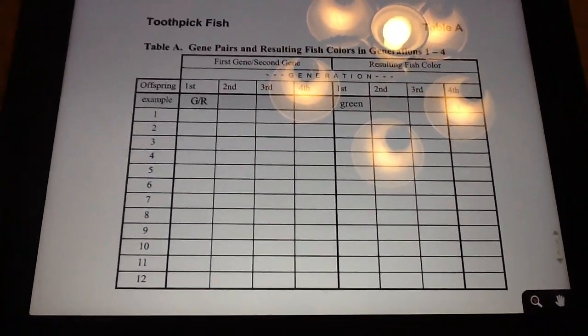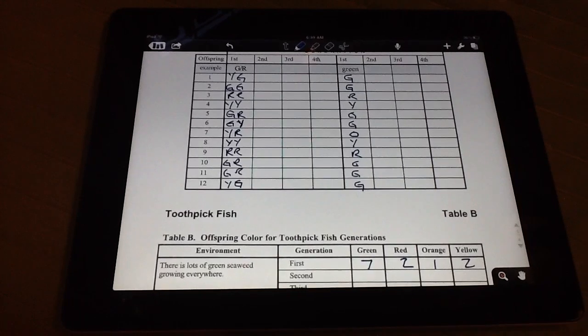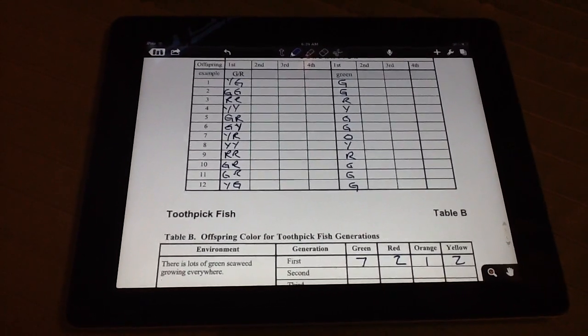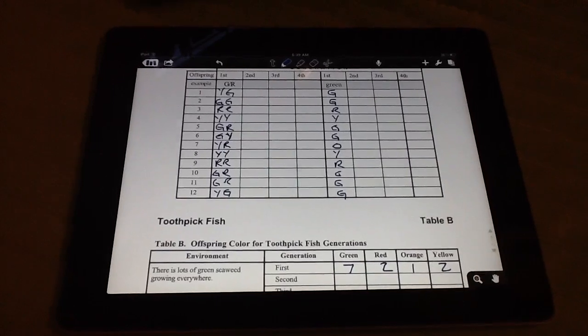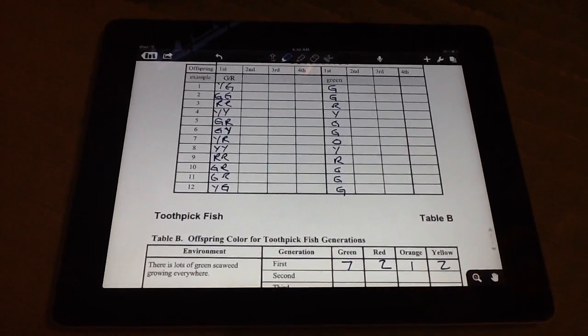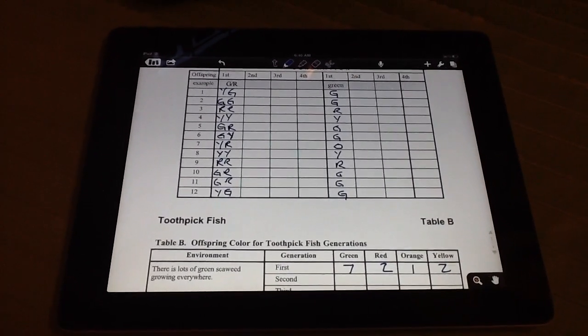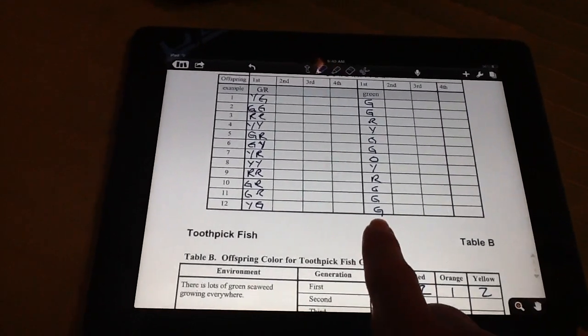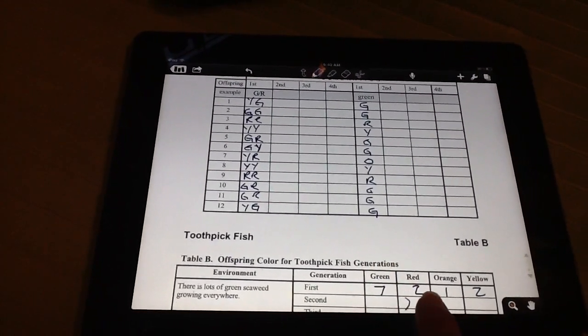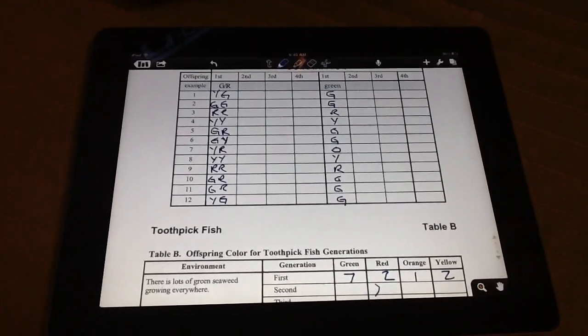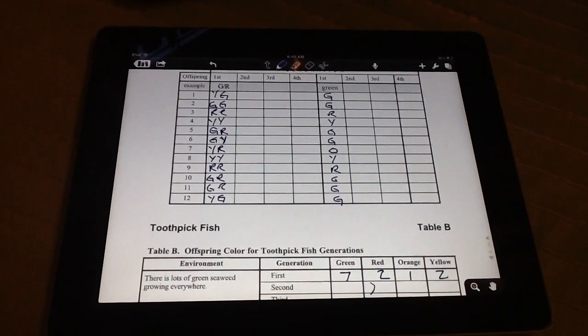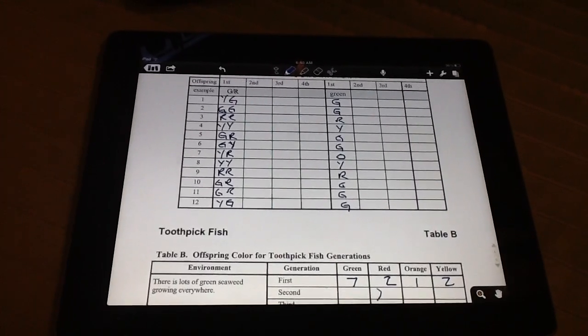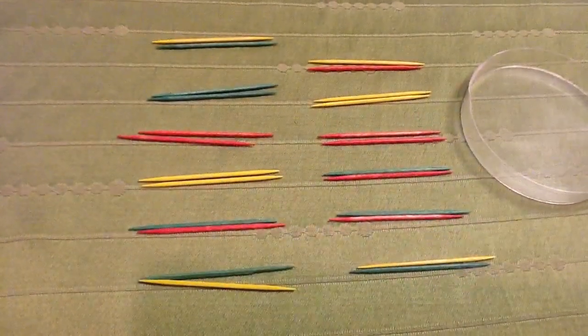The next step in the procedure simply says to take that information from the first data table, table A, count up how many greens, reds, oranges, and yellows you have from that second column, tally it up, and total it into table B. I had seven greens, two reds, one orange, and two yellows.